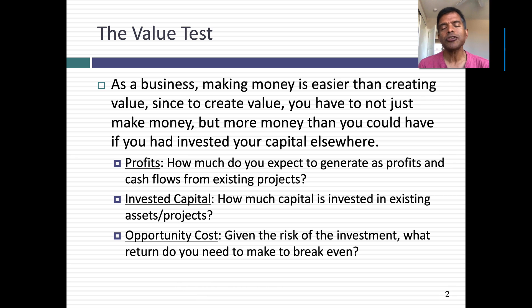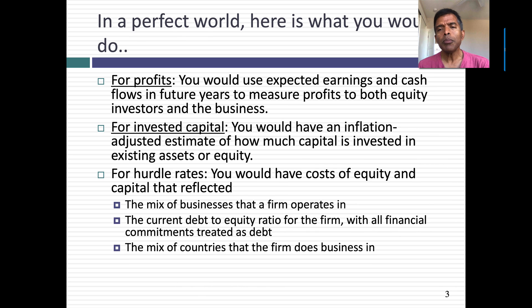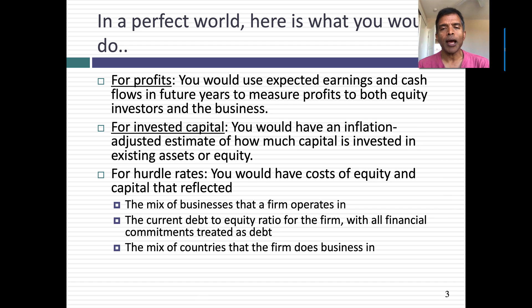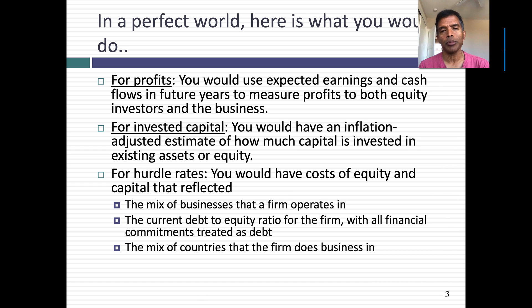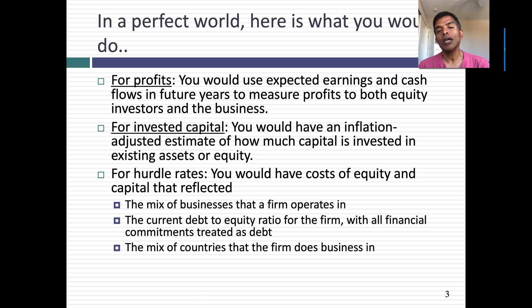Measuring excess returns is really tough to do. In a perfect world, you would use expected earnings and cash flows, because the value of an investment comes from what it does in the future, not the past. For invested capital, you would use an inflation-adjusted measure of capital invested in existing assets — not market value, but actual capital invested. And for a hurdle rate, you'd want to know what you would make on investments of equivalent risk, adjusted for risk, reflecting the weights of multiple businesses and countries.